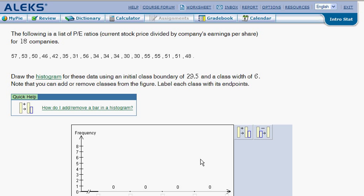Now it tells us here the following is a list of P-E ratios, current stock price divided by the company's earning per share for 18 companies. Now don't worry too much about the reading here because it's all about these numbers. It's not so much about what the numbers stand for. We will do the same thing no matter what the actual numbers represent. In this case, they just provide us with a little context.